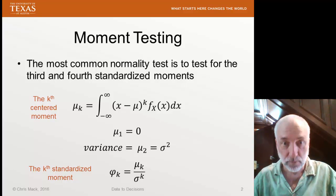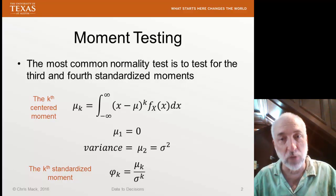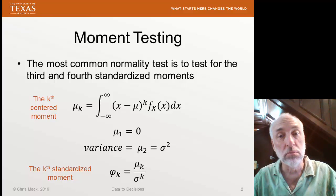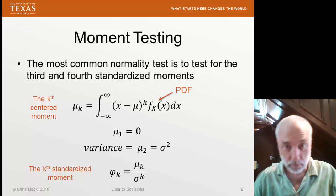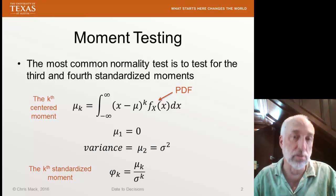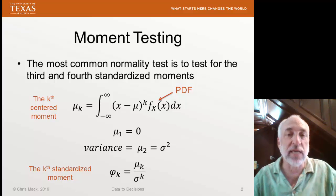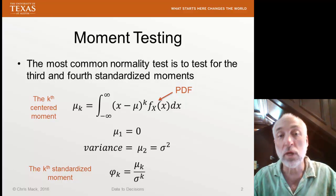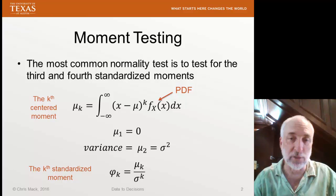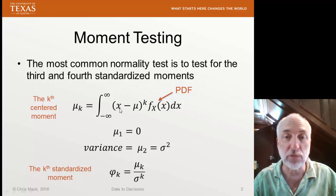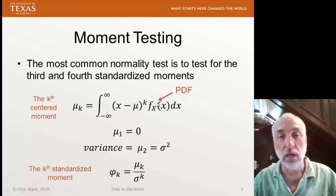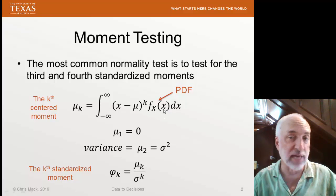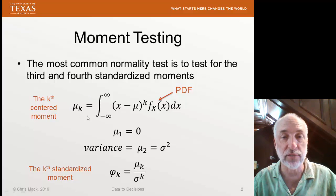What is a moment? A moment is the random variable to some power multiplied by the probability distribution function (PDF), and then integrated over all possible values. The kth moment takes that variable to the kth power. We're going to use the kth centered moment. By centered, it means we take our variable and subtract off its mean, then take that to the kth power, multiply it by the probability of the occurrence of that value of x, integrate, and that becomes our kth centered moment.